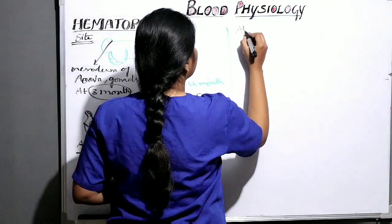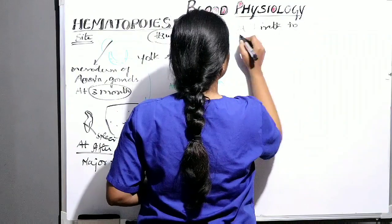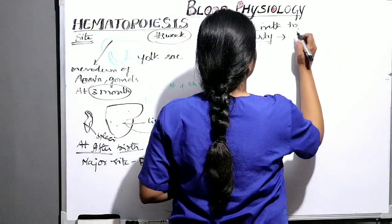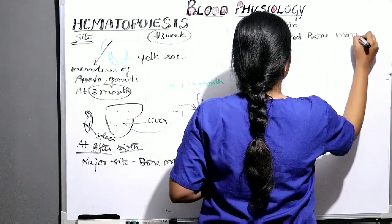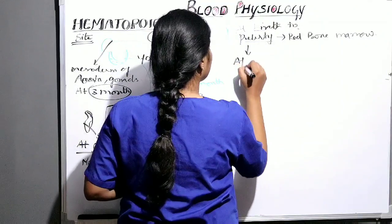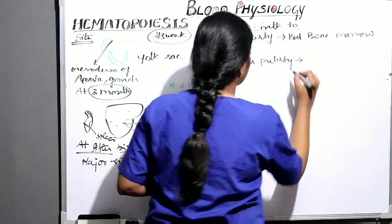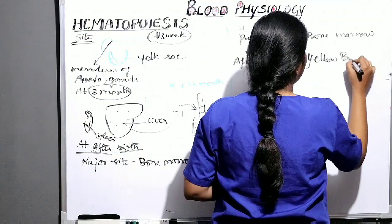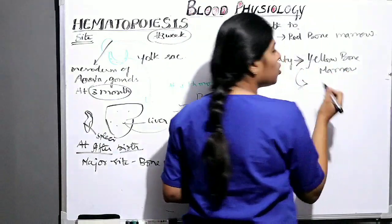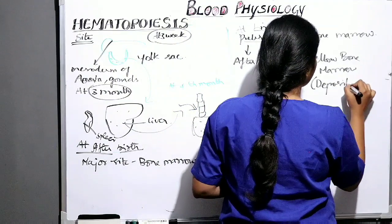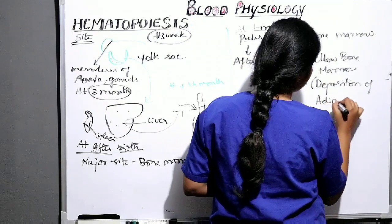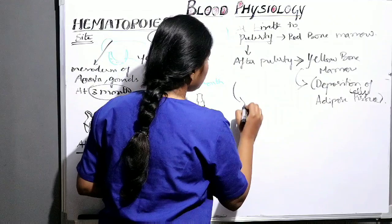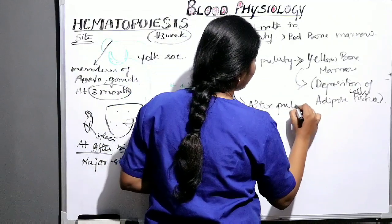From birth to puberty, all bone marrow — or red bone marrow — is active. After puberty, in some bones the red bone marrow is converted into yellow bone marrow due to the deposition of adipose tissue or adipose cells. So after puberty, erythropoiesis continues in the remaining red bone marrow.